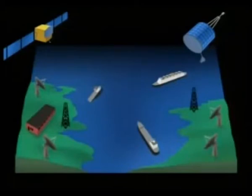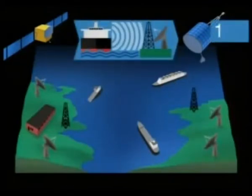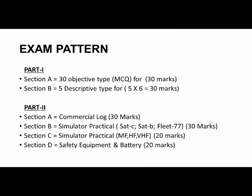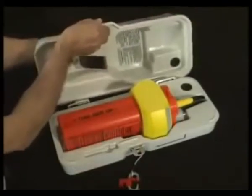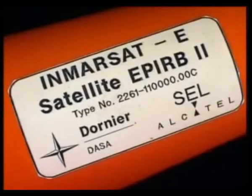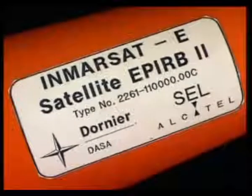The simulator practical is usually carried out by WPC surveyors. Part C is the practical for MF, HF, and VHF equipment, carrying 20 marks, while the SAT-B, SAT-C, and Fleet 77 simulator practical carries 30 marks. For MF/HF/VHF, they will ask you to send a distress alert or a routine communication call — by NBDP or telex mode. Part D involves a practical or questionnaire about safety equipment, batteries, and their documents, usually conducted by the DG Nautical surveyor.